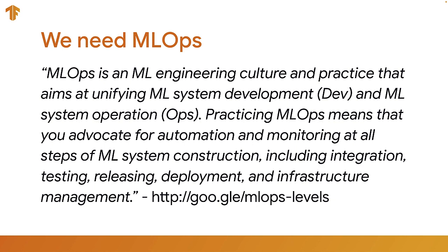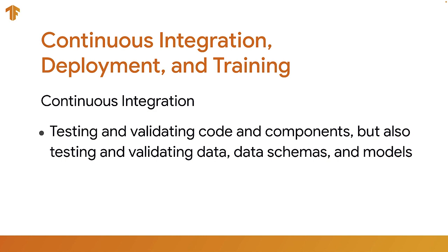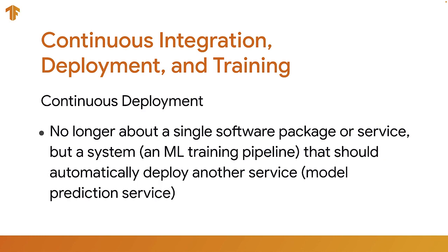There are a few different variations of the definition of ML Ops, and this is a pretty good one. The key things here are it's an automated process that aims at unifying data and the model for training over the lifetime of a product or service. Just as in DevOps, you have continuous integration, but it's not just your code — it's also your data, data schemas, and models. For deployment, you don't just deploy a single piece of software; you're deploying a data transformation and a model into an existing running service, which is a different kind of thing to deploy.